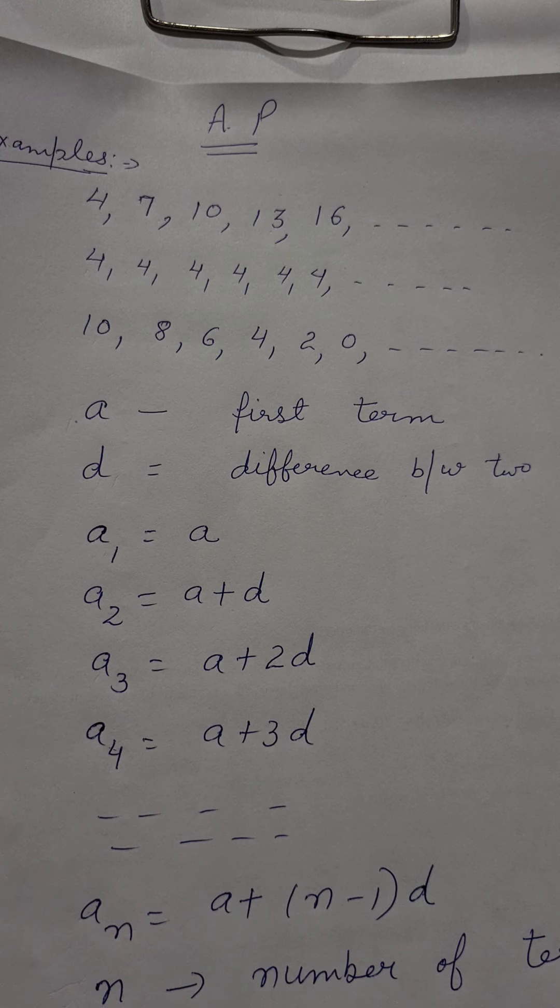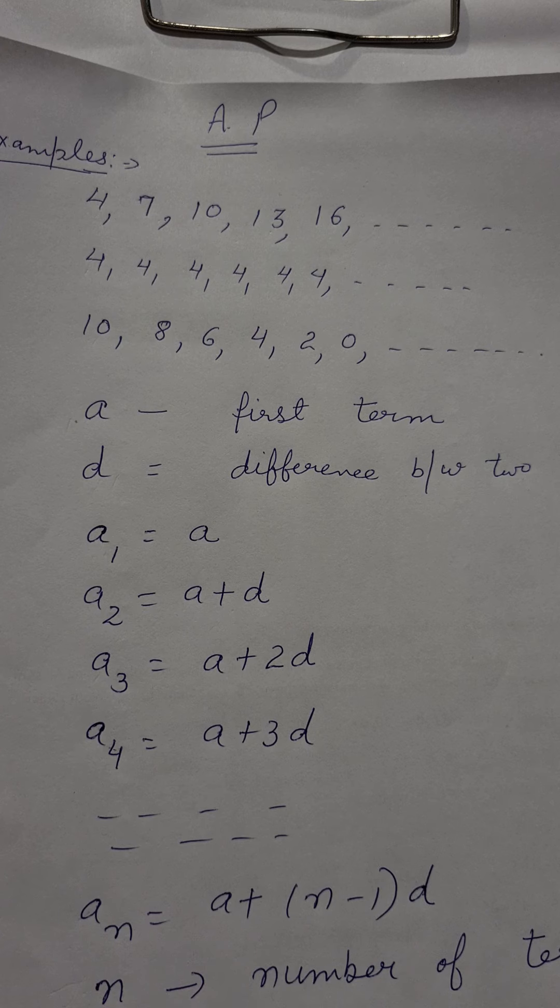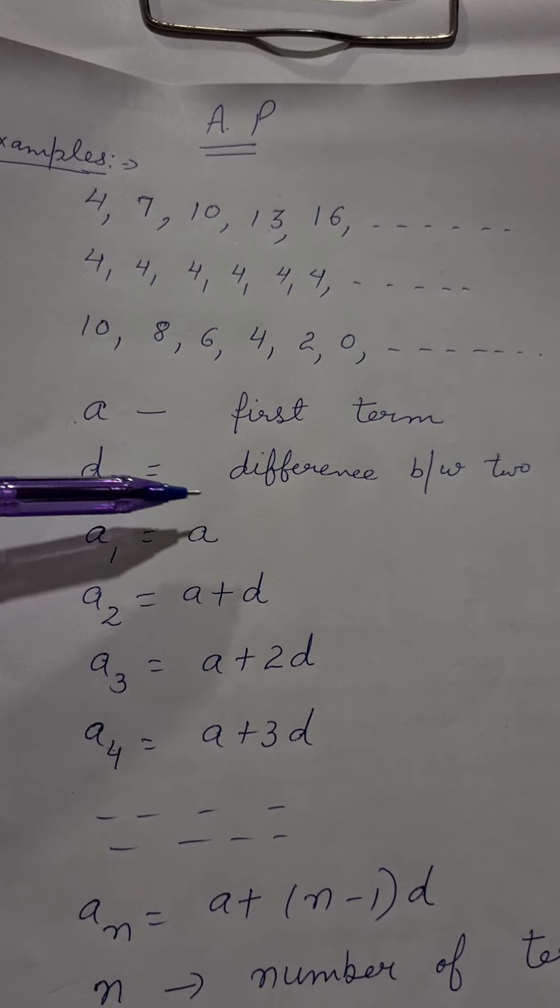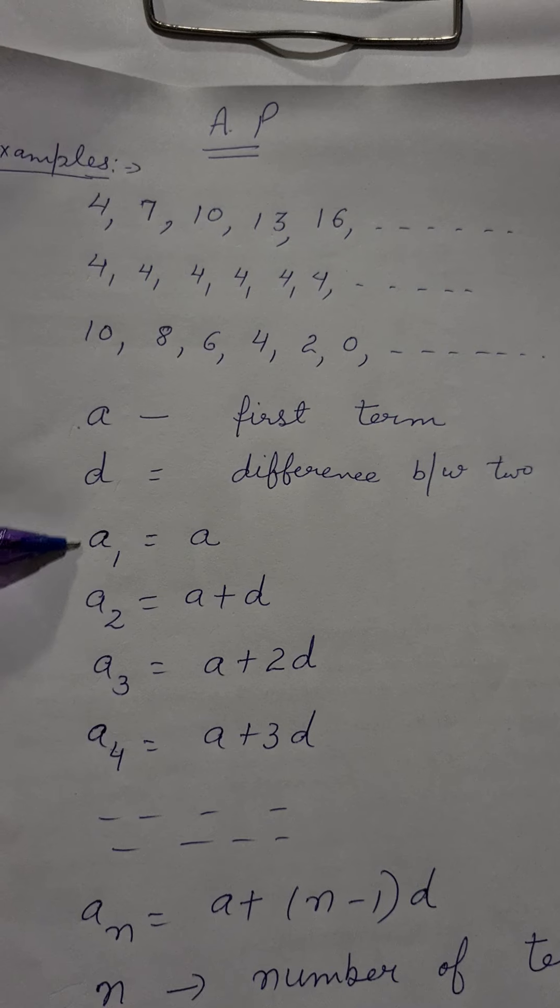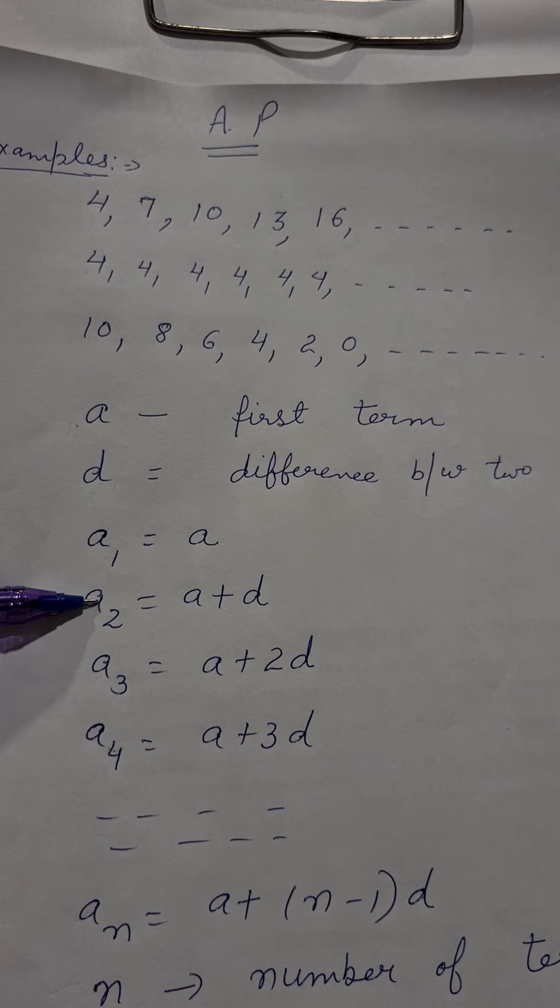So this is denoted by d: difference between two numbers. Now let's derive its general form, that if we have to directly find the nth term. The nth term, if we have to find the fifteenth term, then for this...